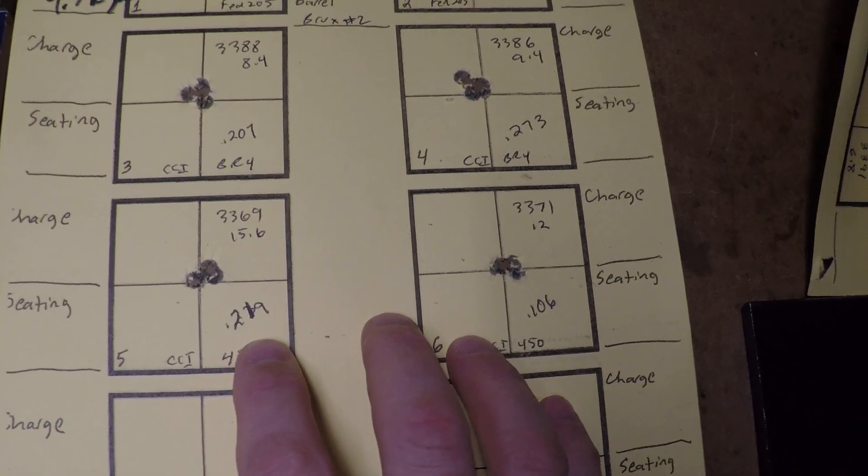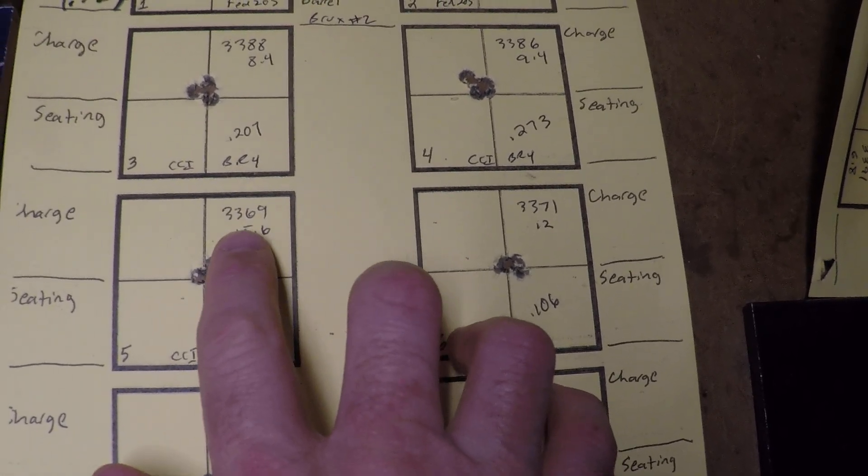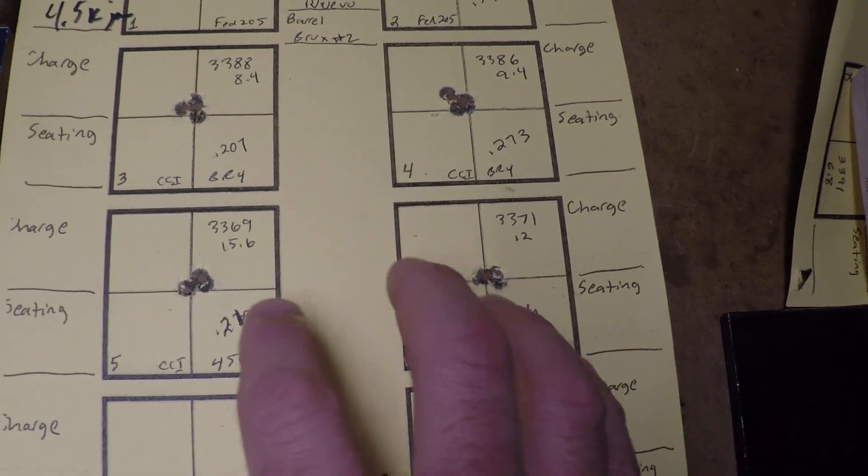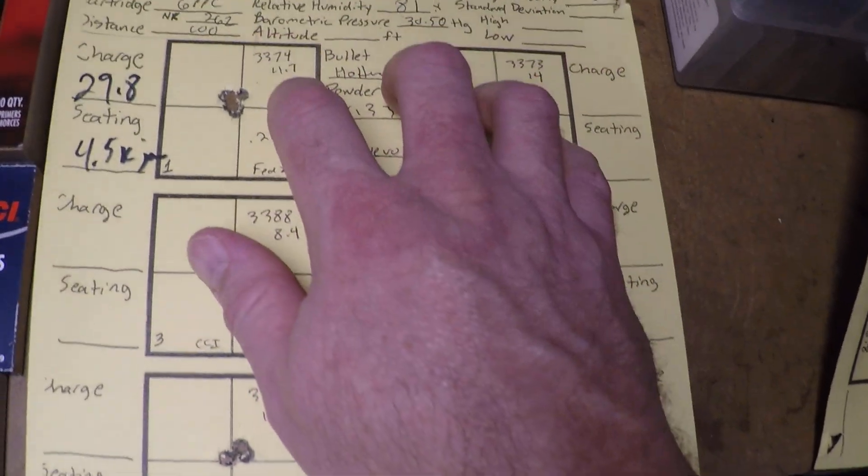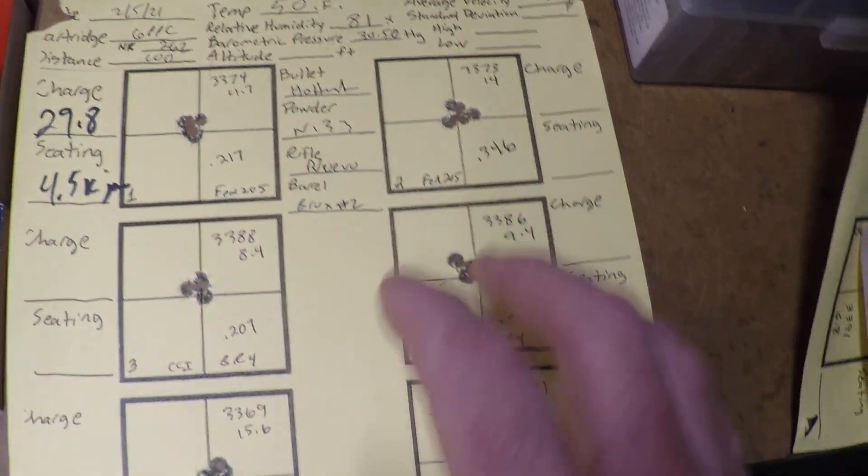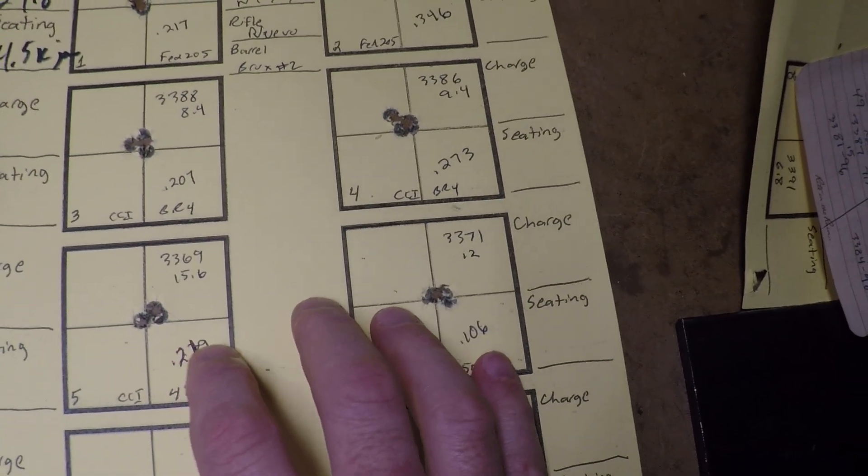But then you go down here to the 450s, and you have 3369, 3371, which it seems like the 450s were very similar in velocity to the 205M. But the groups were smaller in general.